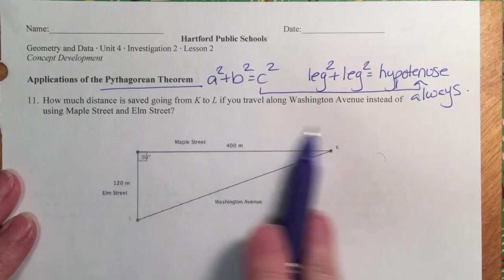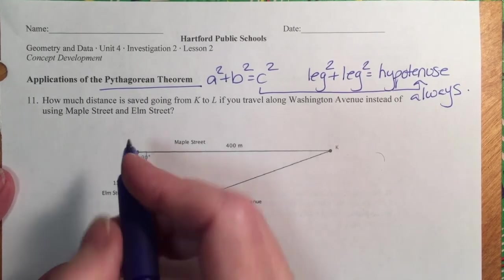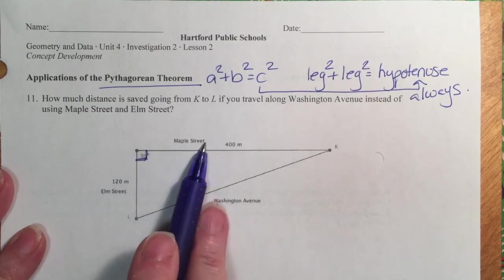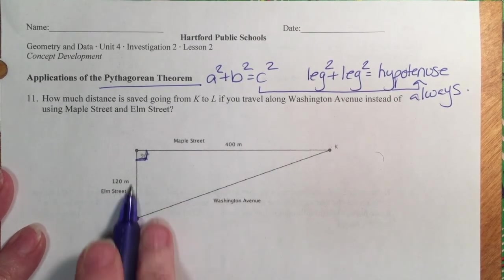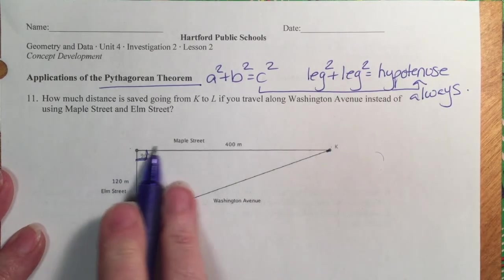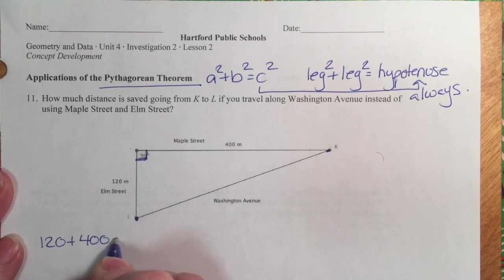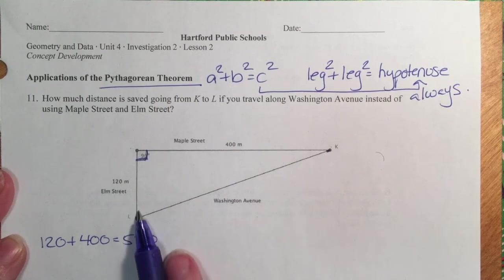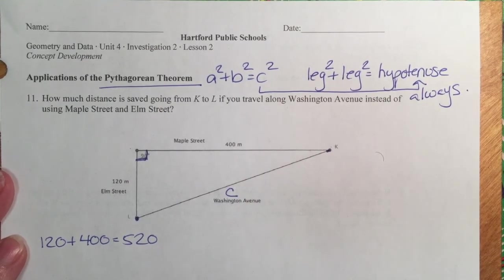Here's a problem with city blocks: Elm Street, Maple Street, and Washington Avenue. Elm Street and Maple Street form a perfect 90-degree angle. Elm Street is 120 meters and Maple Street is 400 meters — walking around would be 520 meters. But we could take a shortcut along Washington Avenue, which is the hypotenuse of the right triangle — it's shorter, but let's find out how much shorter.